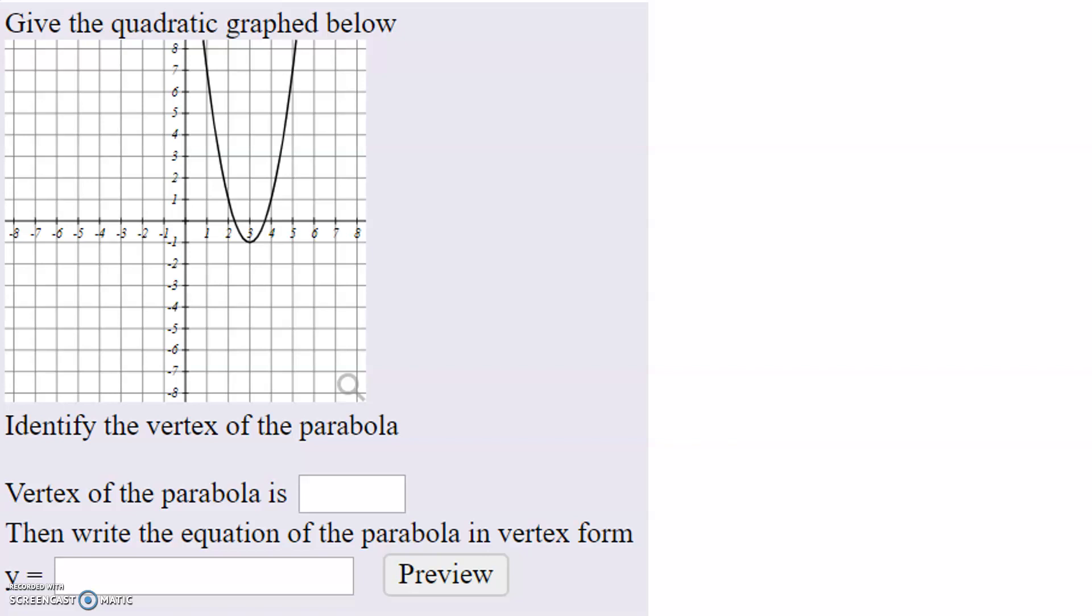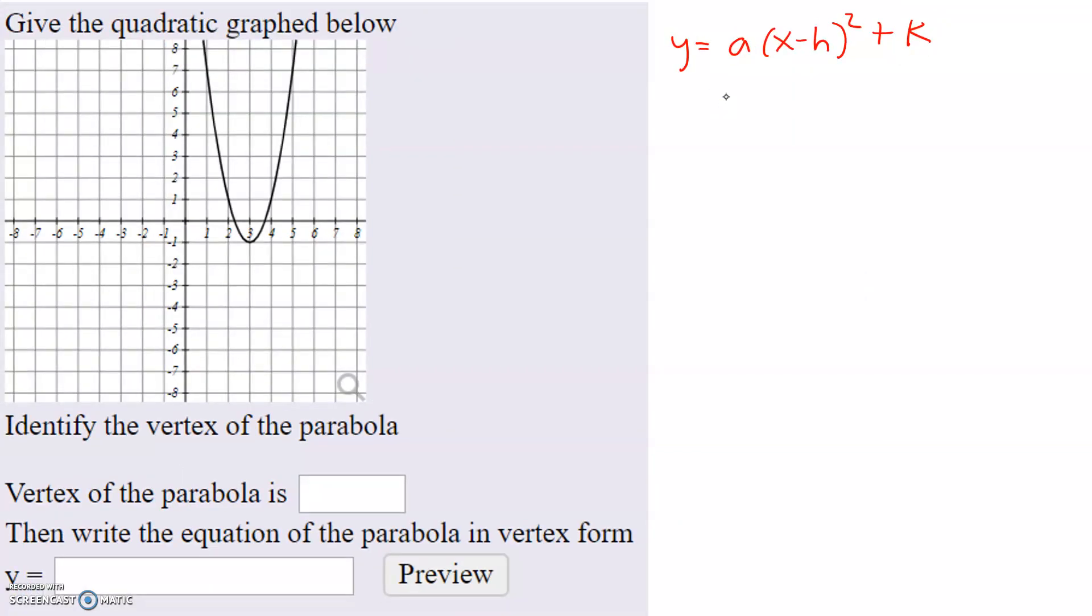So as a quick recap, vertex form is y equals a times x minus h to the second power plus k, where the vertex is the point h comma k.